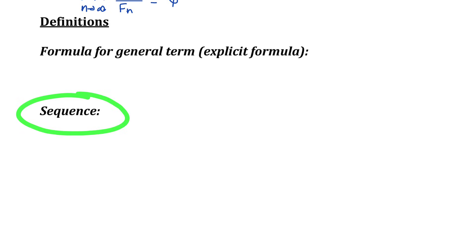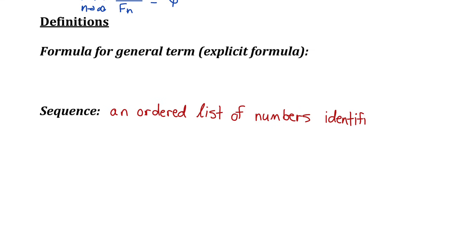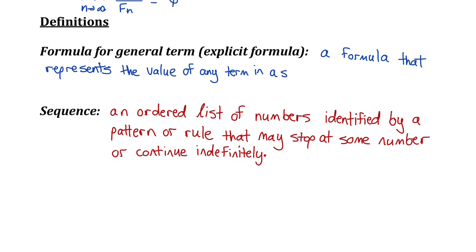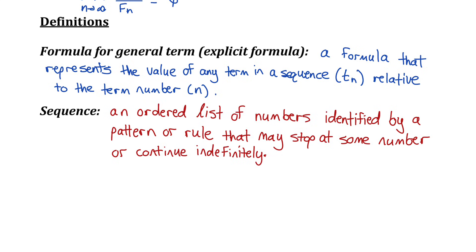A sequence is an ordered list of numbers, identified by a pattern or rule, that may stop at some point or continue indefinitely. For any sequence of numbers, we want to be able to write an explicit formula, or what we call a formula for the general term of the sequence — a formula that represents the value of any term, Tn, relative to the term number n. Basically, it's a formula that shows the relationship between the value of the term and its term number.